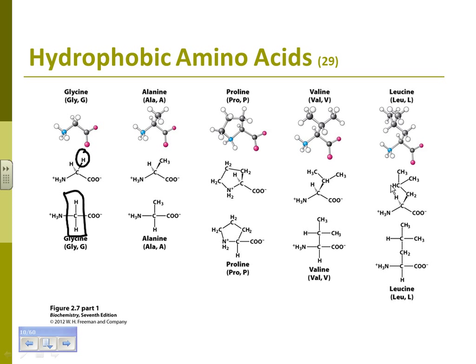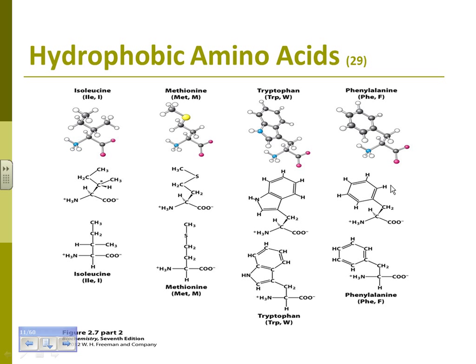Glycine is also asymmetrical because it has those two hydrogens. Alanine just has a methyl group — that's the second smallest. Proline is a weird one; it's an exception. Going up in size: valine, leucine, isoleucine, methionine, tryptophan, and phenylalanine. Tryptophan has a double aromatic ring. Phenylalanine has a single six-membered ring. Methionine is one of the two amino acids that has a sulfur in it.